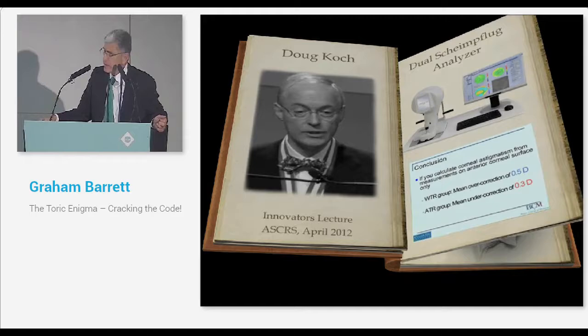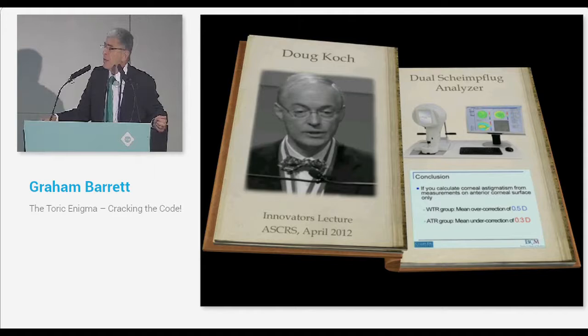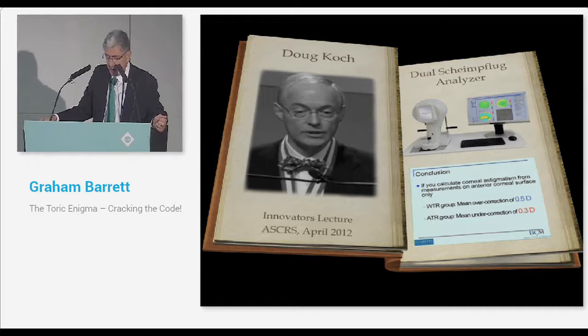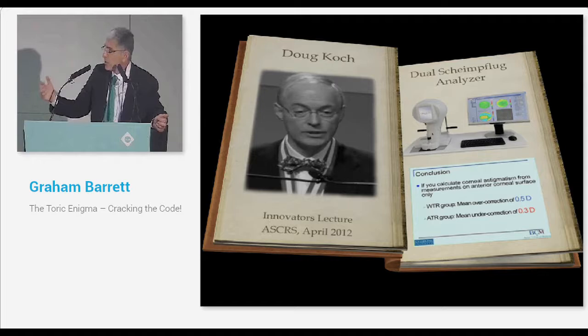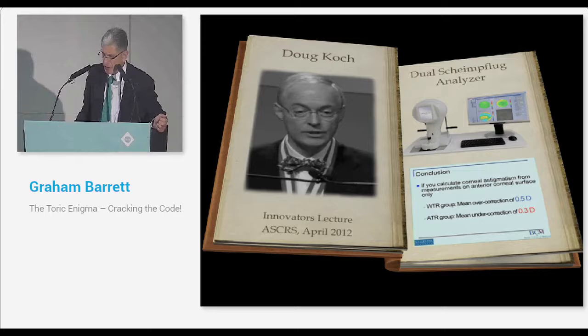You can account for the posterior cornea astigmatism in one of two ways. You can use a nomogram derived by Doug and Wee Lang called the Baylor nomogram, or you can measure it using Scheimpflug imagery, using a Pentacam or Galilei instrument. I'll introduce you today another approach. What I've done is firstly thought of a theoretical model that would explain posterior cornea astigmatism, the observed behavior.